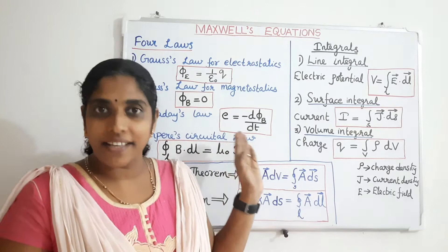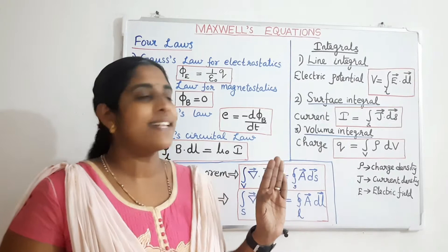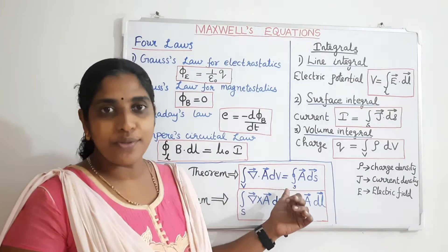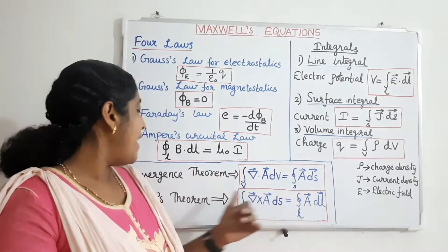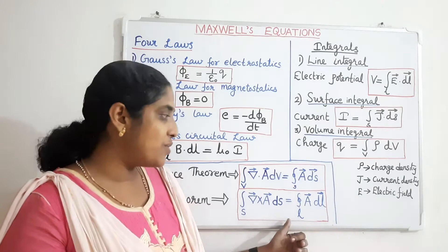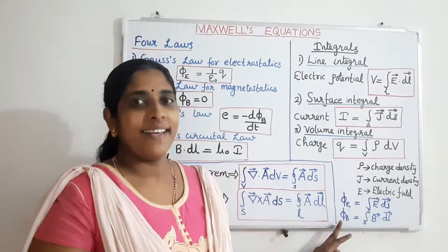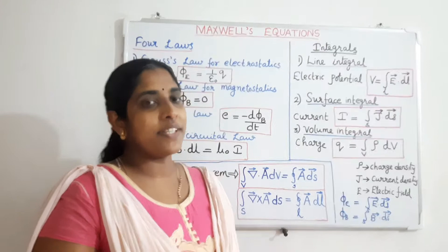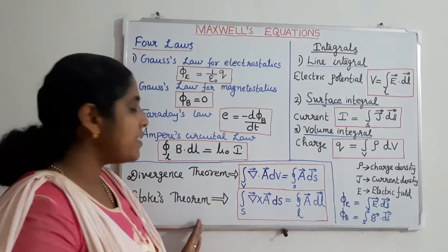Then we will use two basic theorems in mathematics: the divergence theorem and Stokes' theorem, which we have seen in the last video. In the divergence theorem, the volume integral of the divergence of a vector is equal to the surface integral of that vector over the surface which encloses this volume. Stokes' theorem states that the surface integral of the curl of a vector is equal to the line integral of that vector over the boundary of that surface. Electric flux is the surface integral of the electric field, and magnetic flux is the surface integral of the magnetic field over a surface. With these four laws, these integrals, and these two basic theorems, we are going to derive Maxwell's equations.